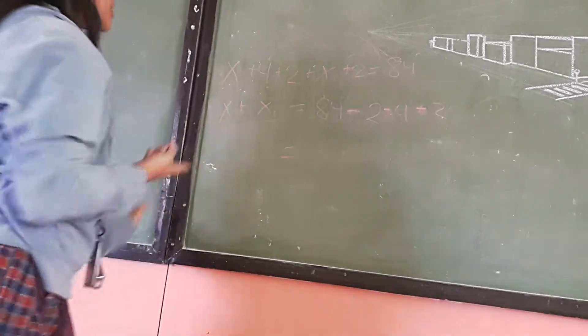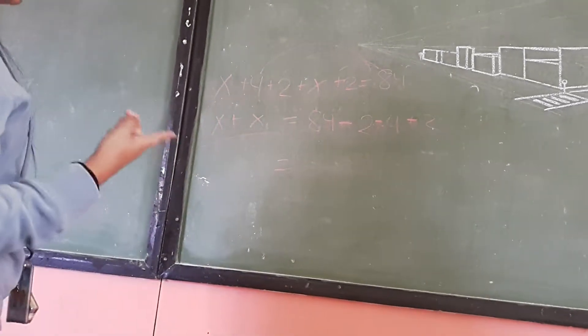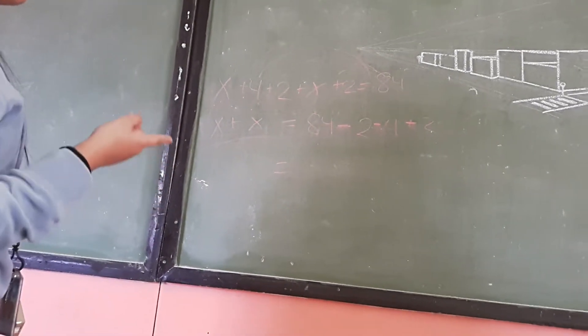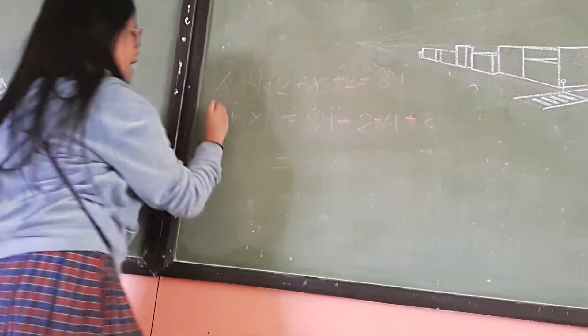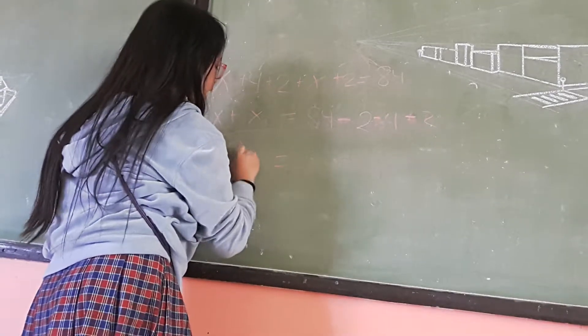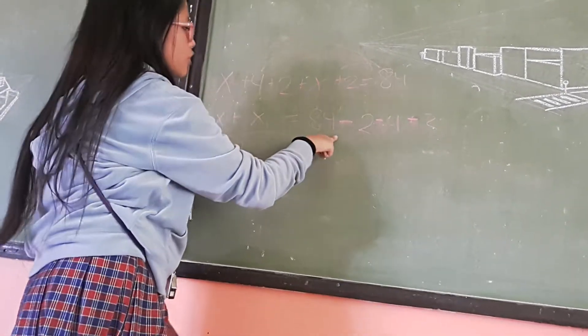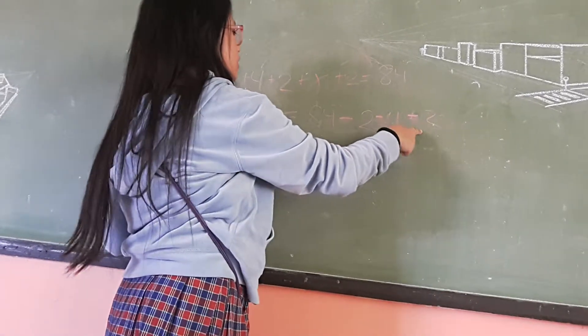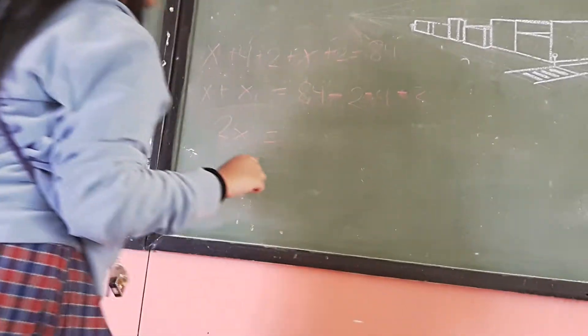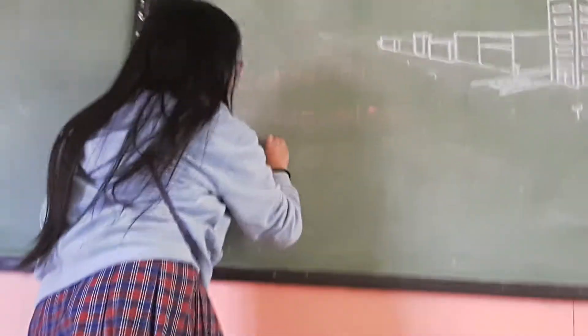What we have here is X plus X equals 84 minus 2 minus 4 minus 2. X plus X equals 2X, while 84 minus 2 minus 4 minus 2 equals 76.